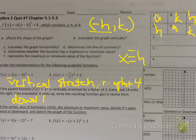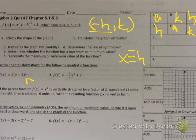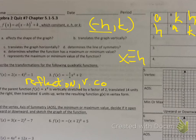Number 3. On number 3, the negative means reflection. The 1/4th — it's not in parentheses, so there was no horizontal stretch or compression. Horizontal stretch or compression can only happen when the number is in front of the x and in parentheses — like (1/4 x) squared. Otherwise, because the 'a' is between 0 and 1, that means you have a vertical compression.